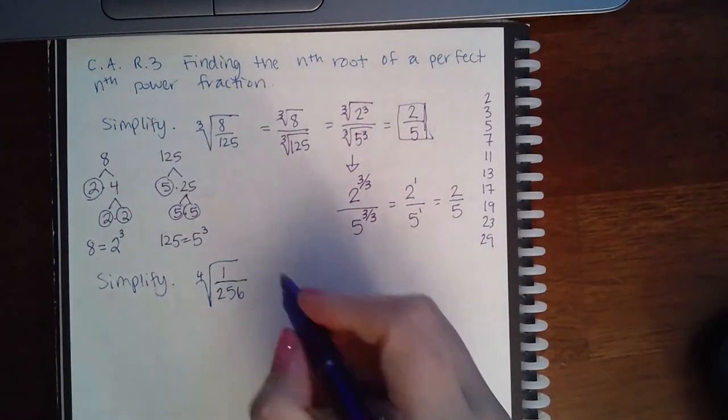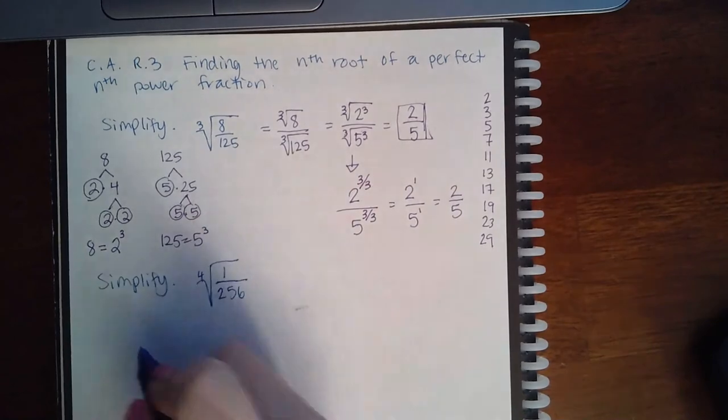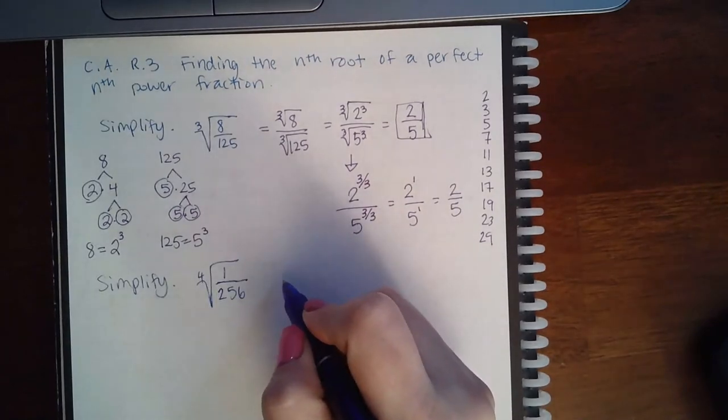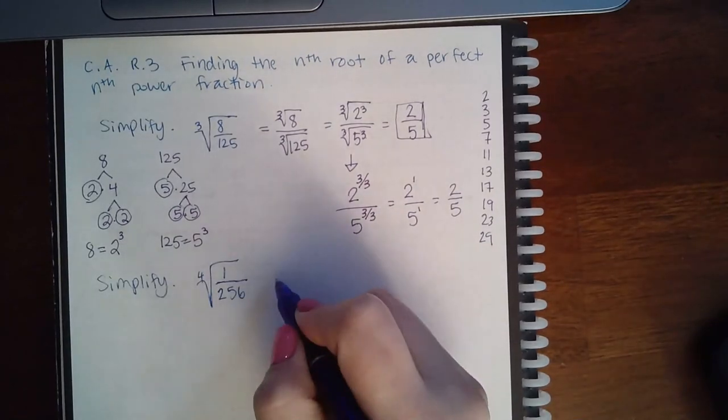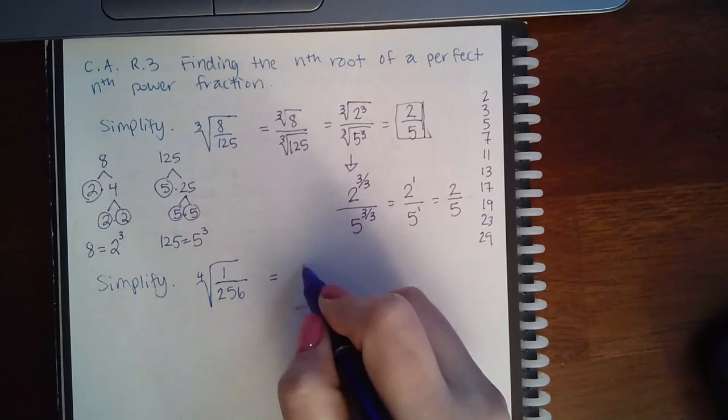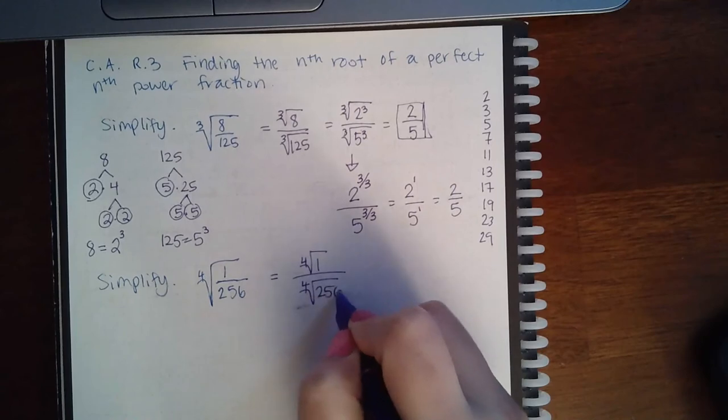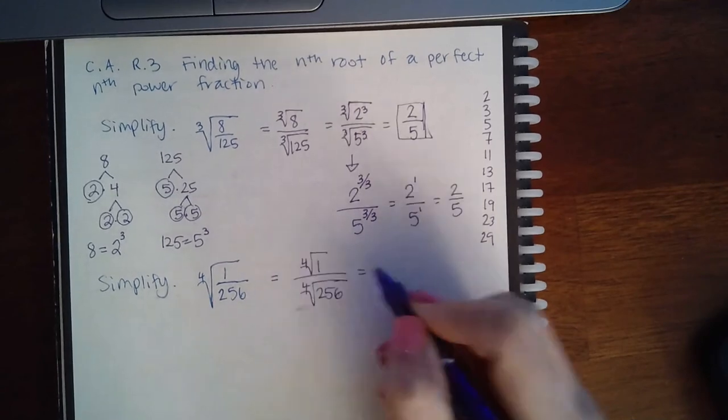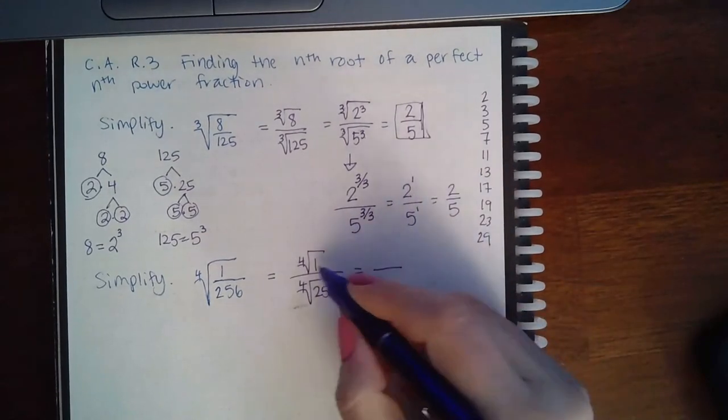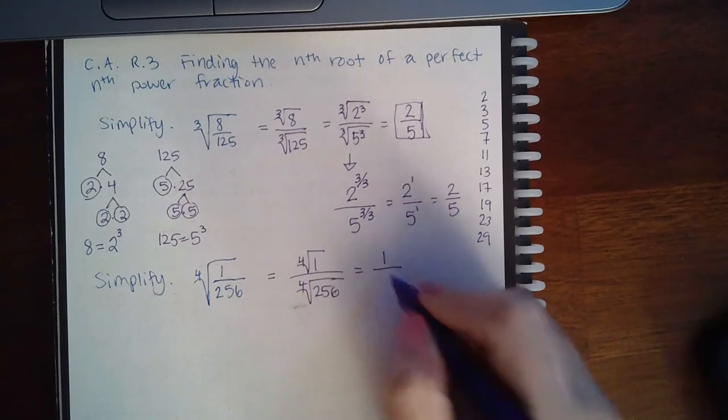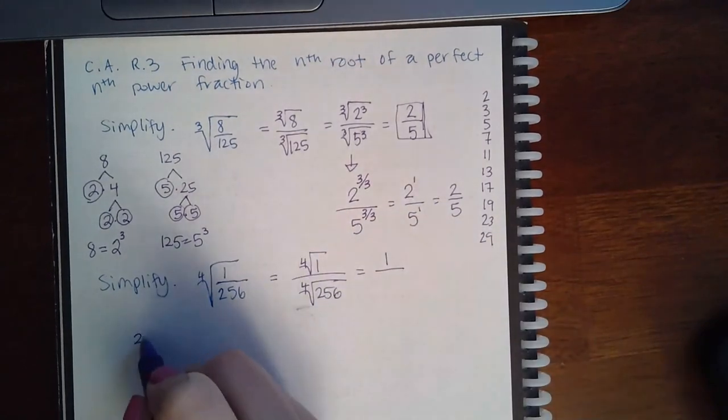So the same thing here can be done. One, you cannot break up. This is just 1. 1 is its own prime number. So you get the 4th root of 1 over the 4th root of 256. And if you memorized your 4th roots, then fantastic, you could do this. Any root of 1 is going to be 1. 256 is a little bit harder.